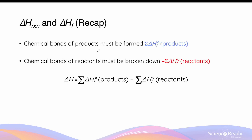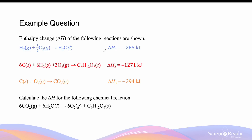The enthalpy change involved in photosynthesis can be calculated using the enthalpy of formation values of the reactants and products. For any chemical reaction, the chemical bonds of the products must be formed — given by sigma delta H of the products — and before that, the bonds of the reactants must be broken, which is endothermic. The enthalpy of a chemical reaction can be determined by finding the difference between the sum of the enthalpy of formation of the products and the sum of enthalpy of formation of the reactants.